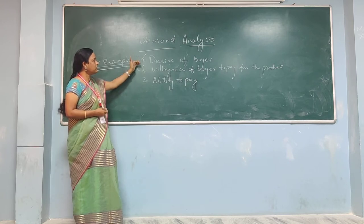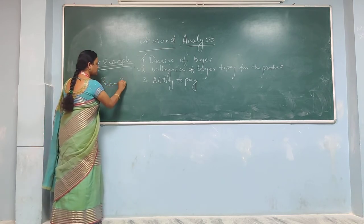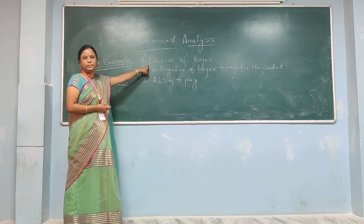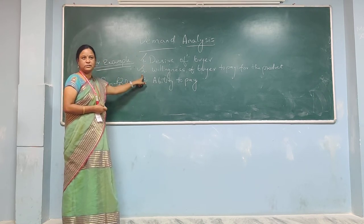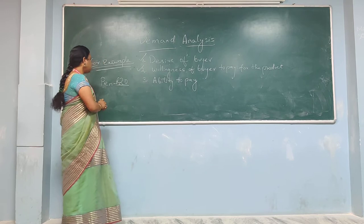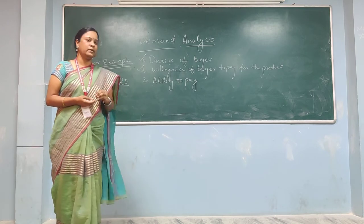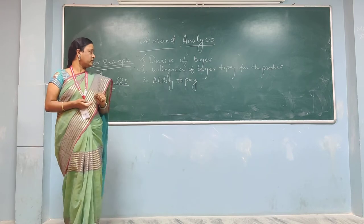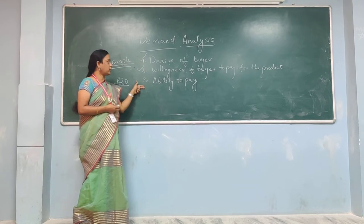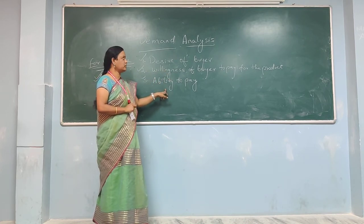When discussing demand, it should fulfill these three conditions. Say that if I want to purchase a pen and the cost is 20 rupees. I have the desire to purchase the pen, I am ready to pay for the pen — willingness. What about ability? Do I have 20 rupees? Yes, right now I have 20 rupees. So here the demand for a pen is now an actual proper demand. As an economics student, always remember that demand to be a proper demand, these three conditions — desire, willingness, and ability to pay — should be satisfied.